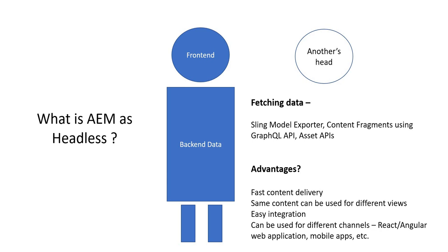That other head is going to use the data to maybe create some view to show to the end user. Now to fetch this data from AEM repository, we have various available options — for example, Sling Model Exporter, Content Fragments using GraphQL API, and Asset APIs. But in this series, in the next few videos, we are just going to cover Content Fragments using GraphQL API.